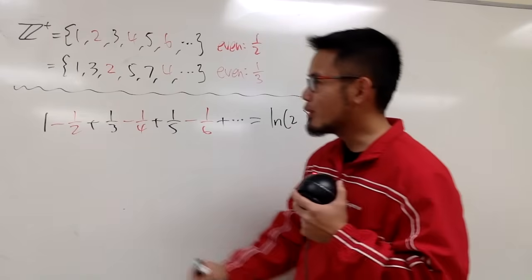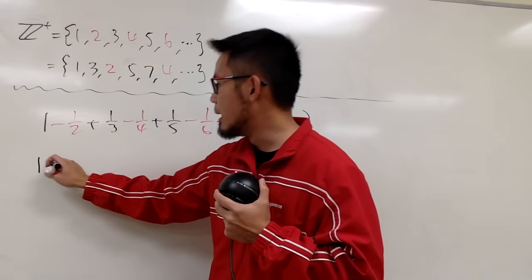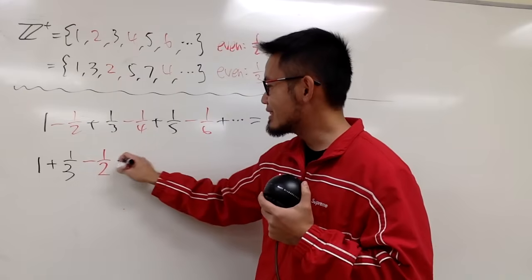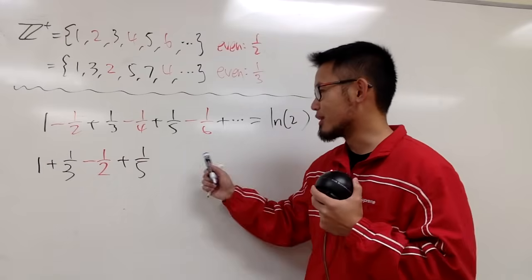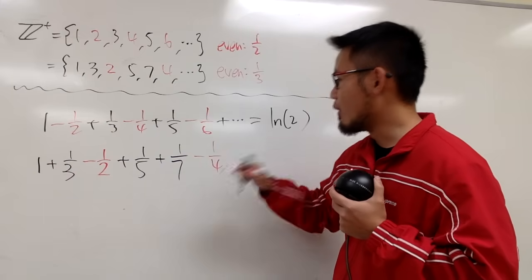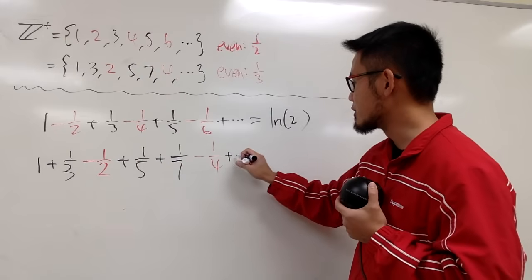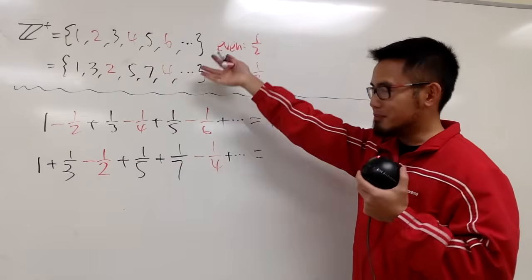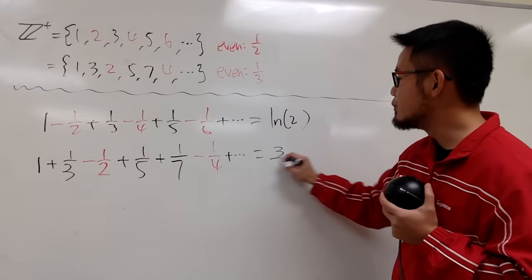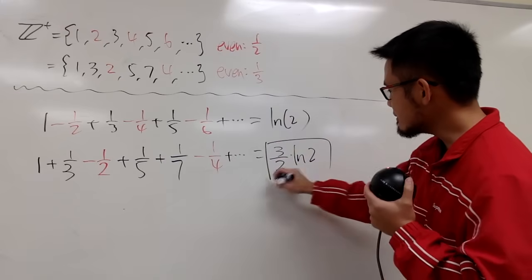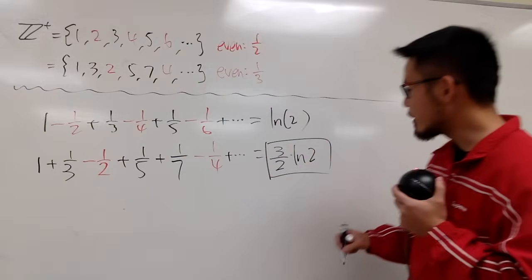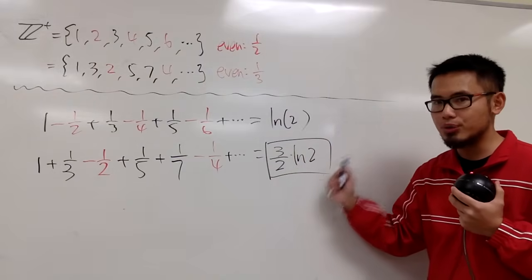Now, this is what's going to happen. I'm going to write down 1 first, and then next I will put down plus 1/3. And then I will bring down minus 1/2. And then I'm going to put down plus 1/5. Take a guess — what am I going to put down next? I will put down plus 1/7. And then minus 1/4. And this will keep on happening the same way. So what's the answer to this? Well, this in fact is equal to 3/2 times ln 2. Earlier it was just ln 2, but this series in this order is equal to 3/2 times ln 2. Surprising, huh?